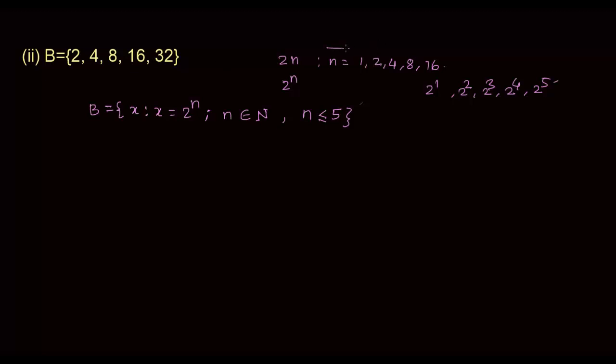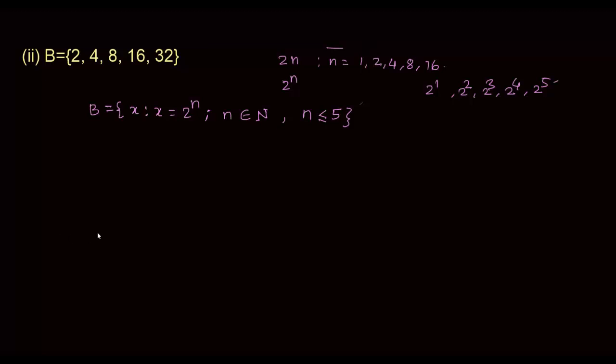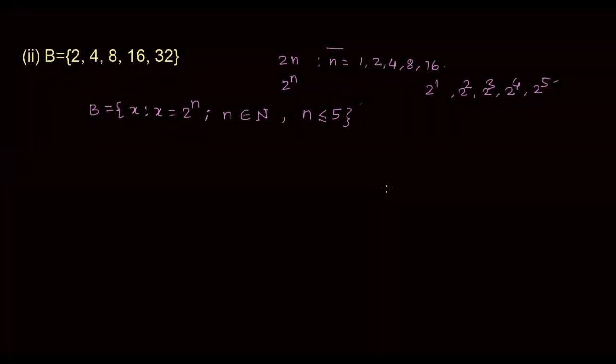This example is a classic illustration where you can possibly go in some other direction altogether. While trying to represent the powers of 2, you could have written it as multiples of n. You should be aware of this and not commit that kind of mistake.